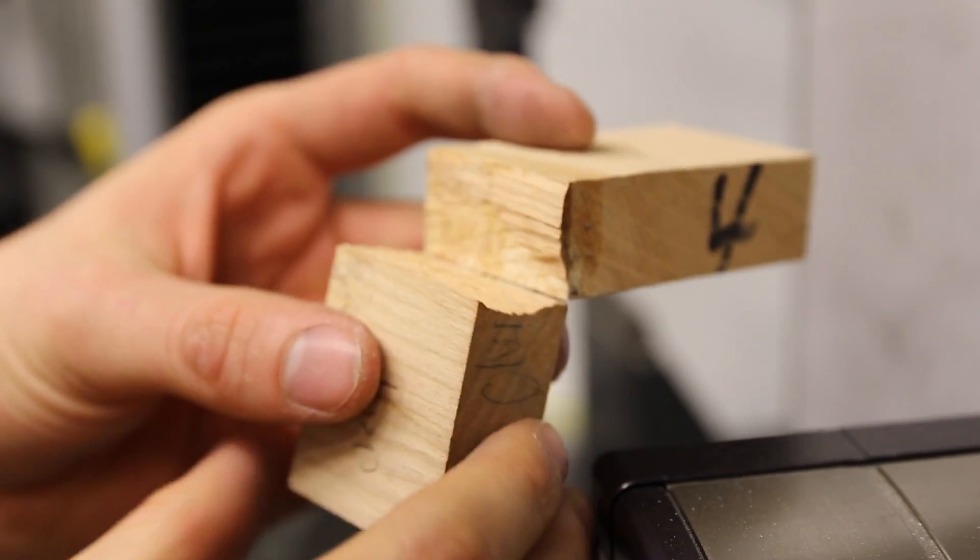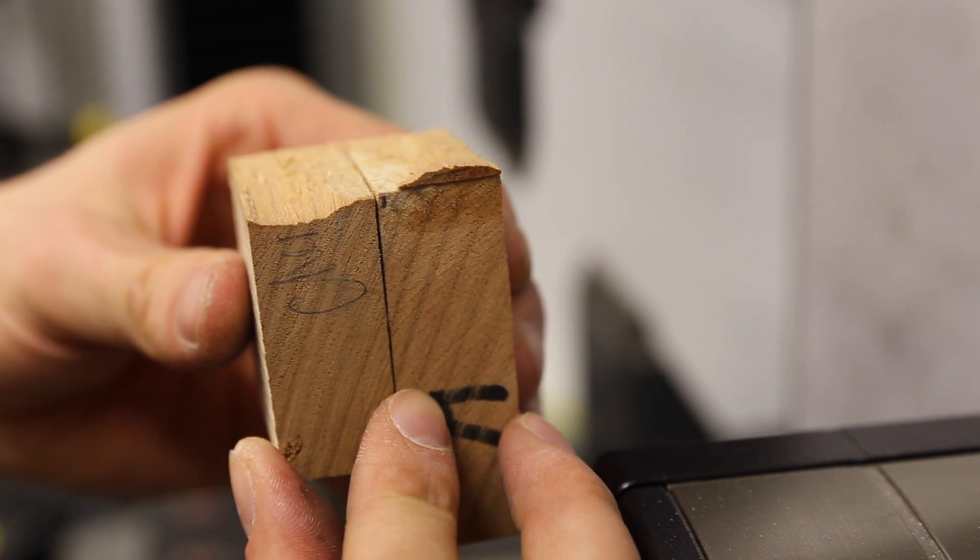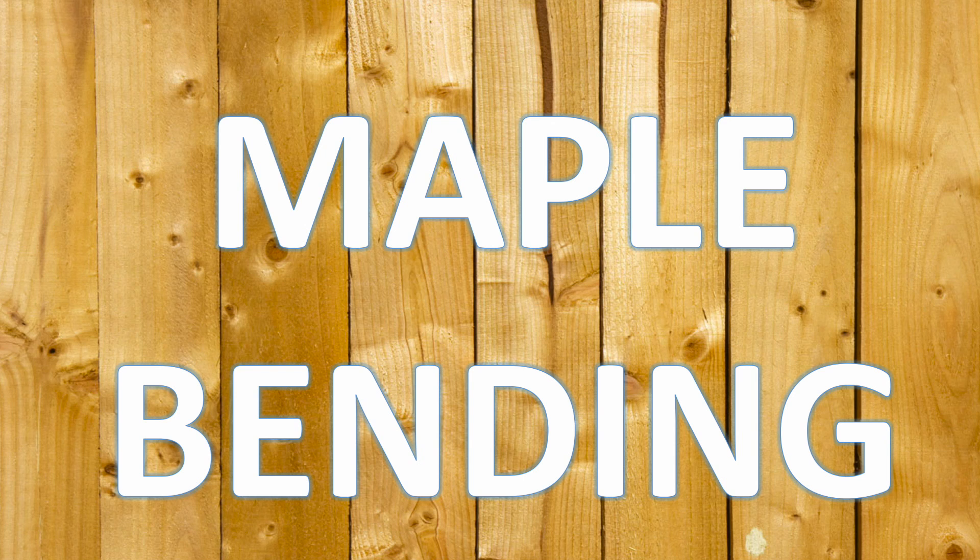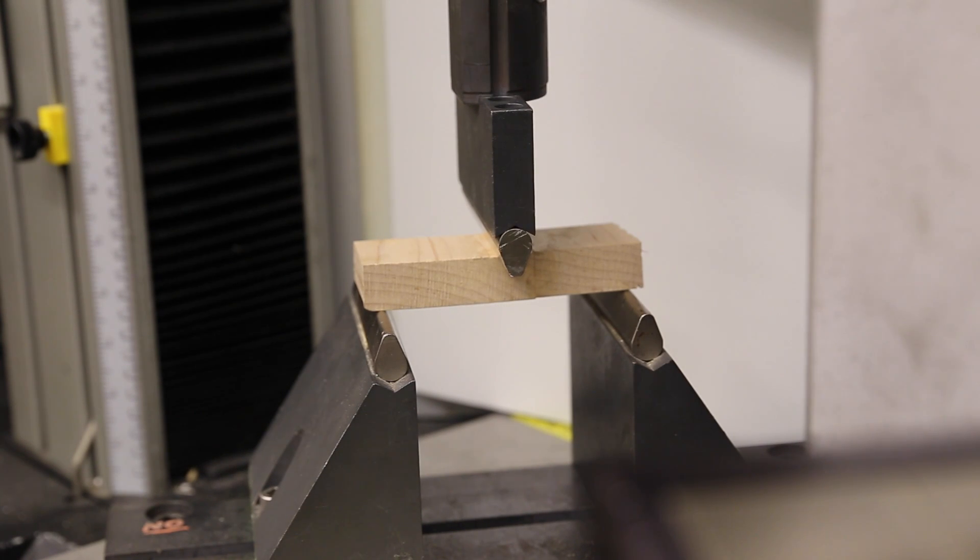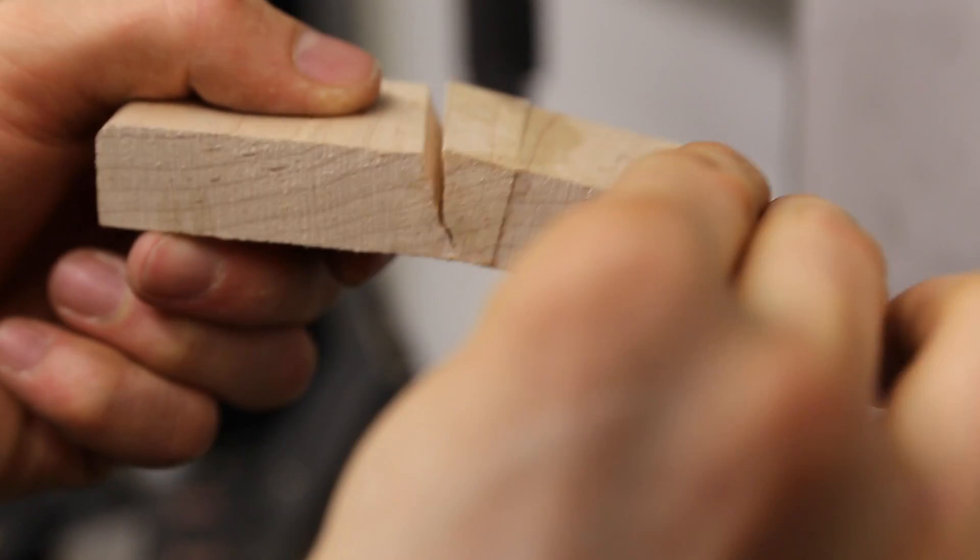So that's interesting. It broke mostly along the glue line, but a good chunk of it broke through the wood. No technicalities there. The maple sample broke right through the wood.